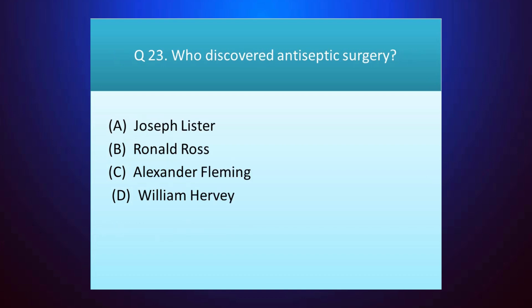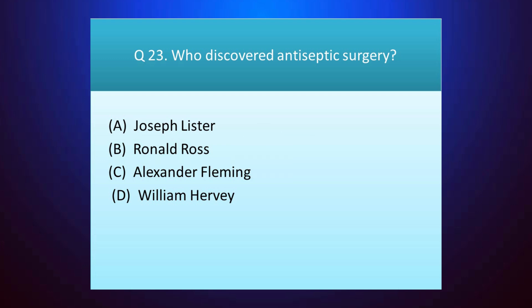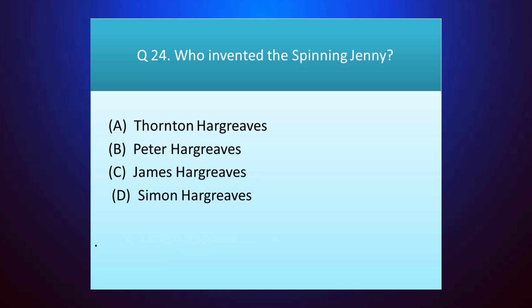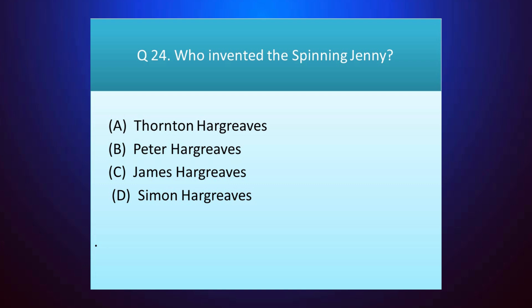Question number twenty-three: who discovered antiseptic surgery? Your time starts. The answer is option A — Joseph Lister. Question number twenty-four: who invented the spinning jenny? Your time starts. The answer is option C — James Hargreaves.